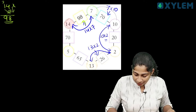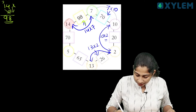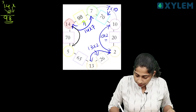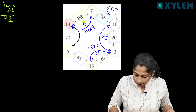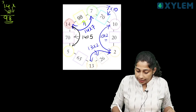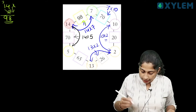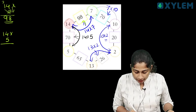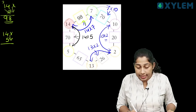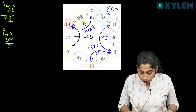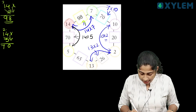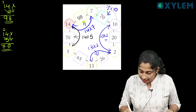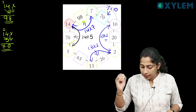Let's select one number. Here we are 14 × 5. What is 14 × 5? 70. We check: 4 × 5 is 20, balance 2. 1 × 5 is 5, plus 2 is 7. So 70. Clear? Yes. Correct.